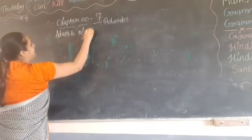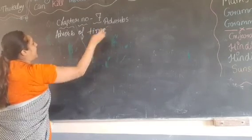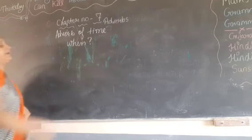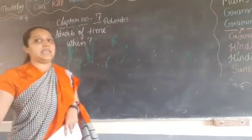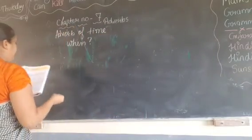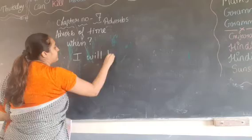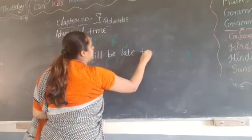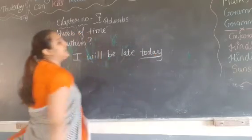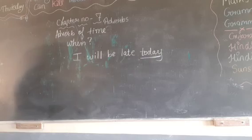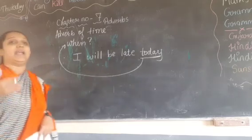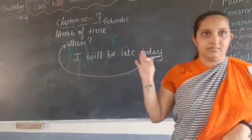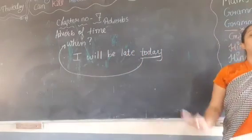Next is adverb of time. Time suggests when the action happened — it gives the answer to 'when.' Words like 'yesterday,' 'today,' and 'tomorrow' suggest when things happened. For example: 'I will be late today.' The word 'today' tells us when — so time is equal to 'when.'